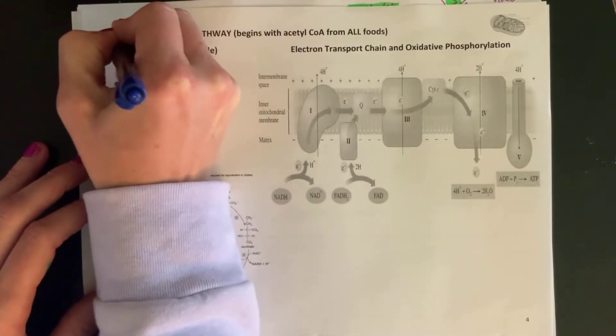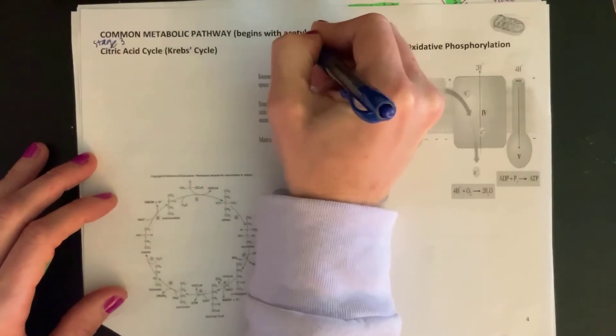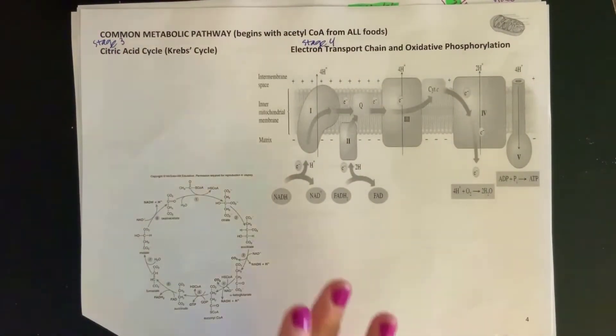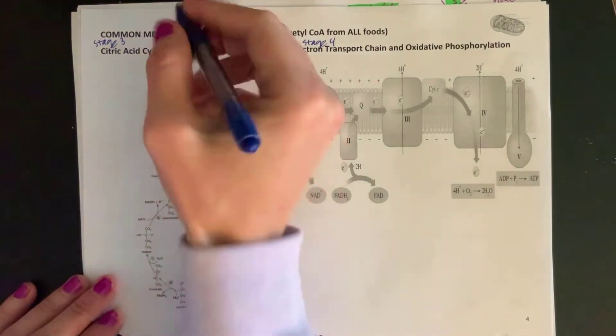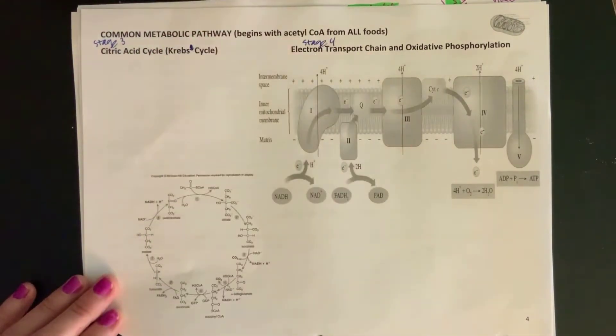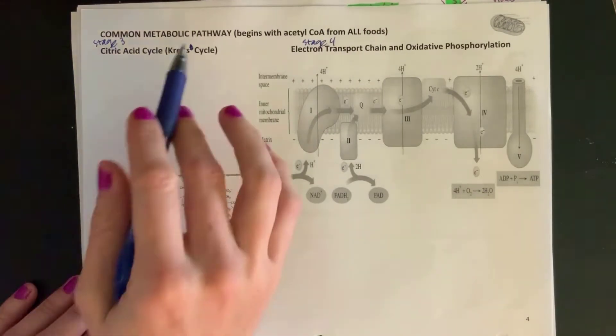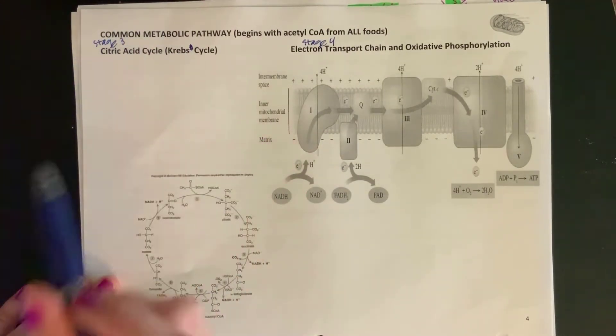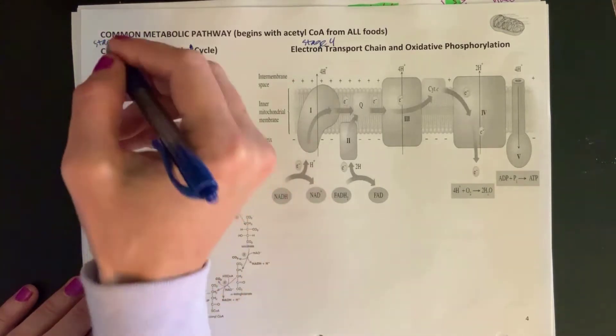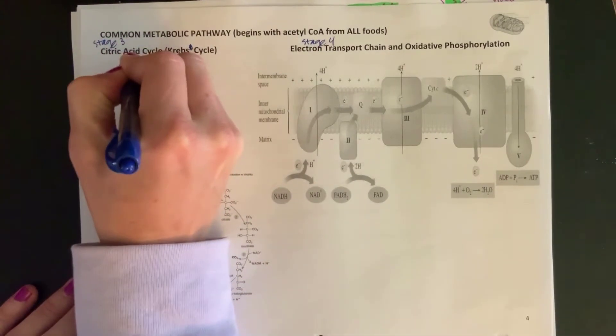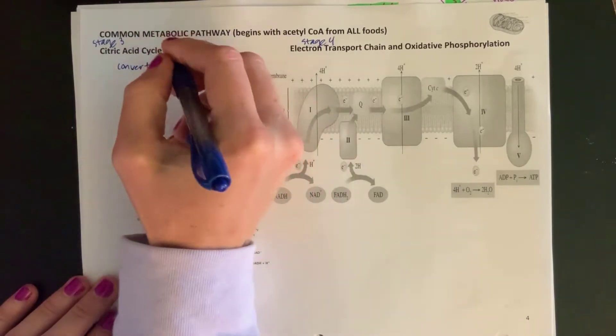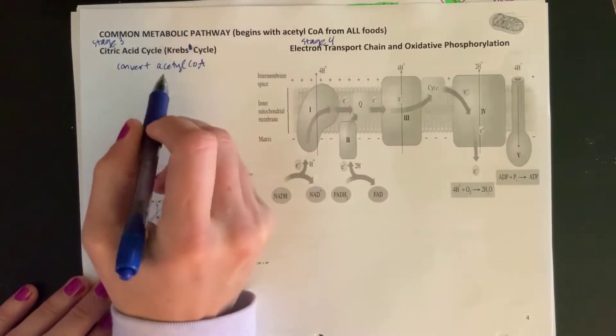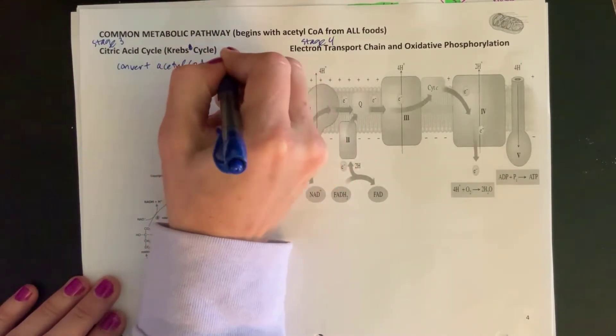On the first slide we referred to this as stage 3, and then this was stage 4. We're going to first take a look at stage 3, which is the citric acid cycle or the Krebs cycle if you're in a more bio-focused class. They mean the same exact thing. The goal of the citric acid cycle is to convert the acetyl CoA—at this point all of your food has been converted into acetyl CoA—so you're going to convert that into high energy coenzymes.